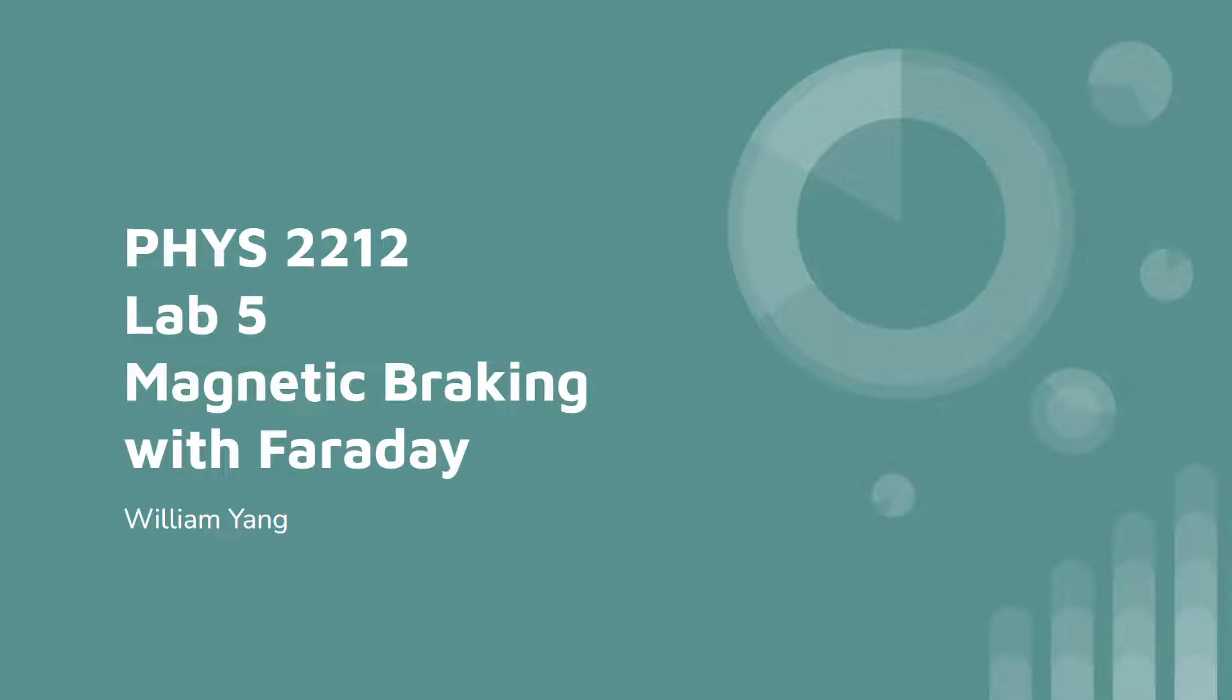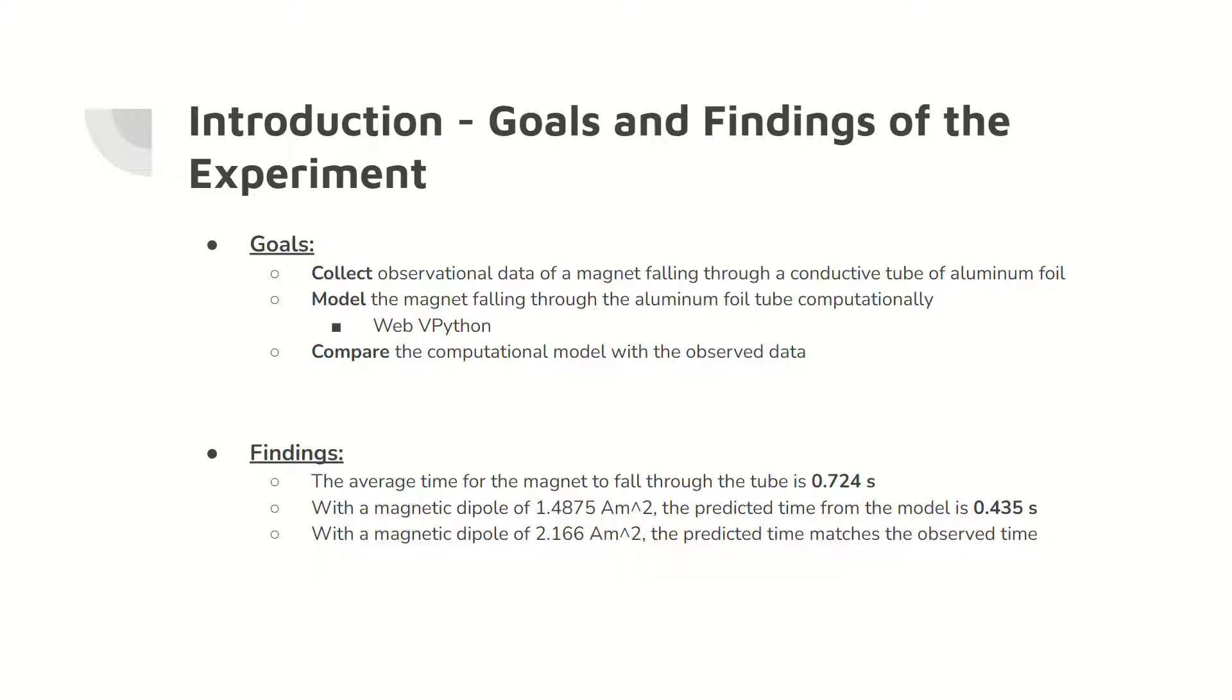Welcome to Physics 2212 Lab 5, Magnetic Breaking with Faraday. The main goals of this experiment are to collect observational data of a magnet falling through an aluminum foil tube, computationally model the interaction in vPython, and compare the model with the observational data.